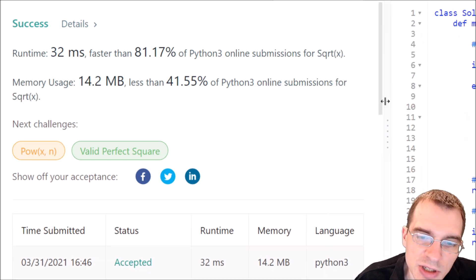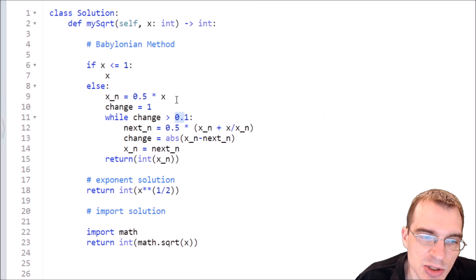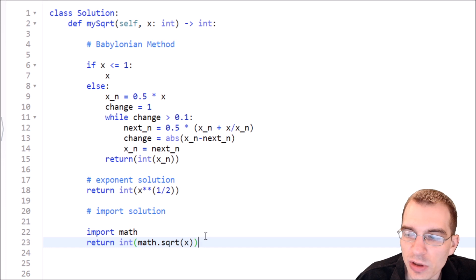So this is a case where the easiest solutions are probably what you should be using in practice. There's no reason to reinvent the wheel and try to find a new way to implement square root when it can be done so easily in the base language. But for the purposes of having a somewhat more interesting coding problem, I thought it would be interesting to actually try to implement an algorithm that finds a square root mathematically instead of just using something baked into the language. So thanks for watching, and keep coding.